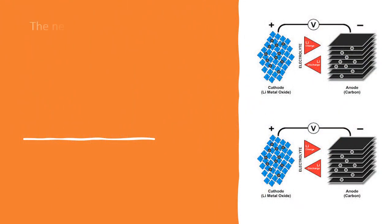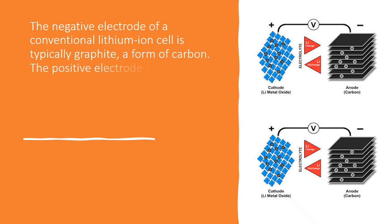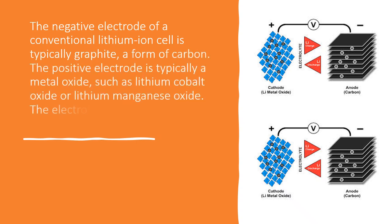The negative electrode of a conventional lithium-ion cell is typically graphite, a form of carbon. The positive electrode is typically a metal oxide, such as lithium cobalt oxide or lithium manganese oxide. The electrolyte is a lithium salt dissolved in an organic solvent.